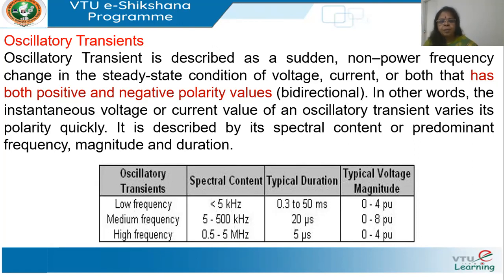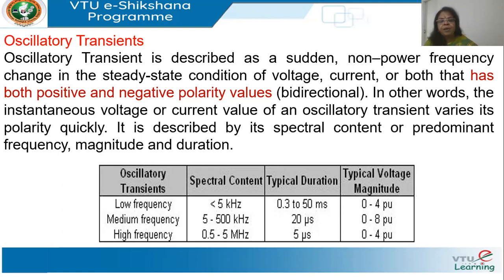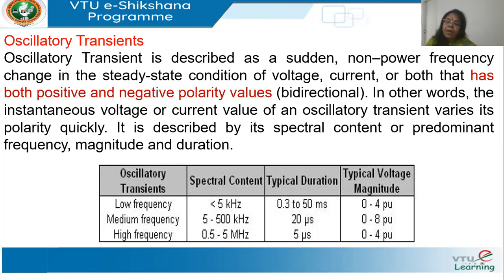Next we have oscillatory transients — sudden non-power-frequency changes in the steady state of voltage or current that have both positive and negative polarity. They are described by frequency of oscillation: low frequency (less than 5 kHz), medium frequency, and high frequency. Unlike impulsive transients characterized by rate of rise and fall, oscillatory transients are characterized by their spectral content — the frequencies present in the transient.